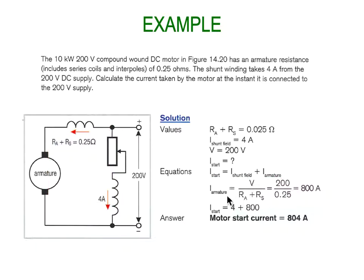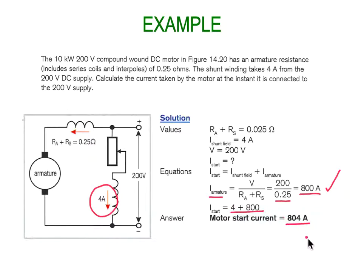The armature current is reasonably easy to work out — it's simply the voltage divided by the resistance. So 200 divided by 0.25 is 800 amps, which is the vast majority of the current. Our shunt field separately is 4 amps independently, and we end up adding those together. The correct answer is 800 amps. So to get a motor up and running — just this 10 kilowatt motor, which is not a huge motor — takes 800 amps at start, before any back EMF is initialized and reduces our current. That's going to take a fair bit of thinking about.